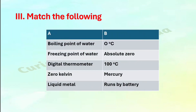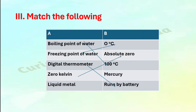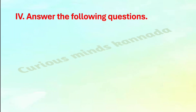Extra — Match the following: Boiling point of water — 100 degree Celsius. Freezing point of water — 0 degree Celsius. Digital thermometer — runs by battery. Zero Kelvin — absolute zero. Liquid metal — mercury.